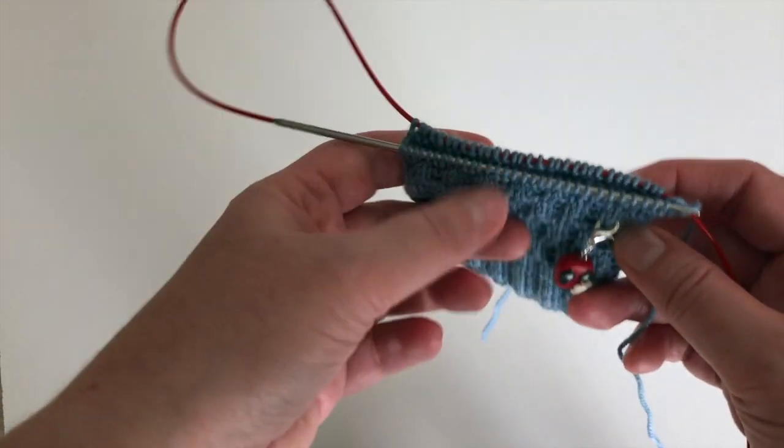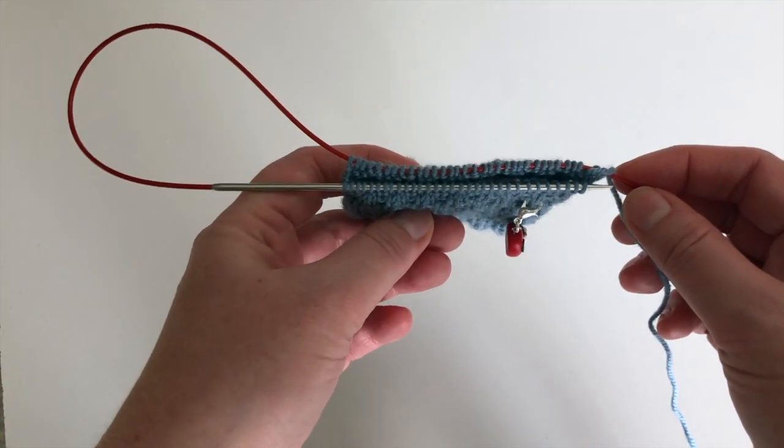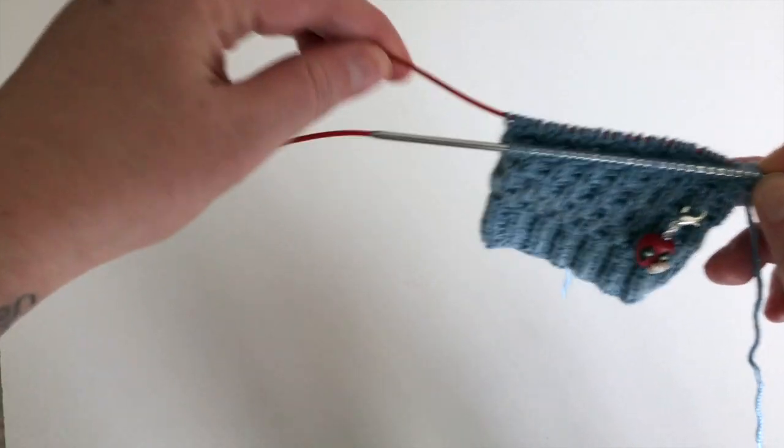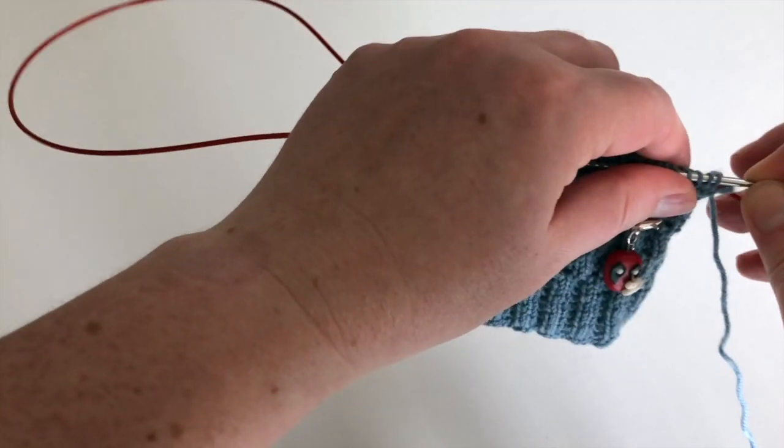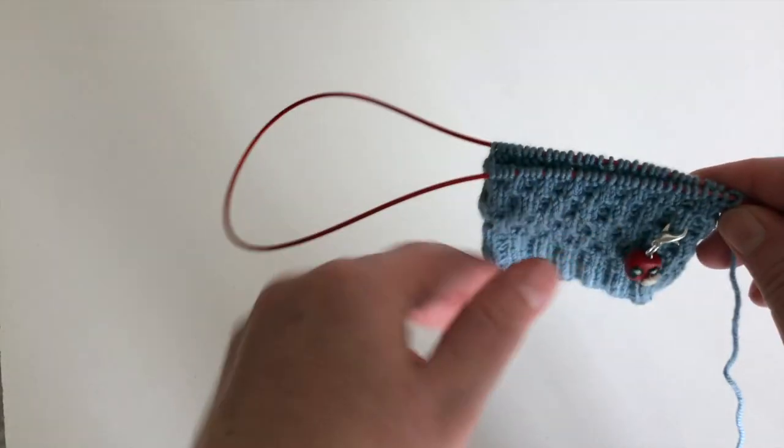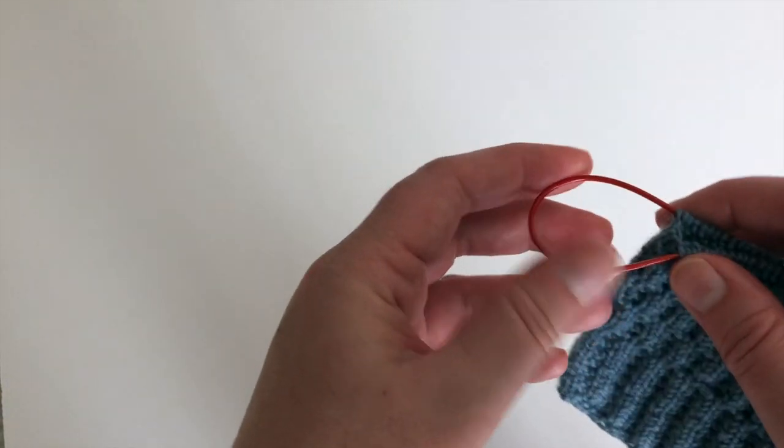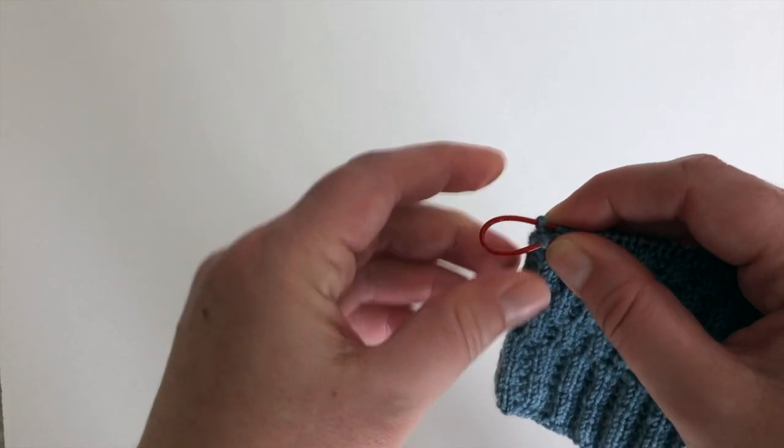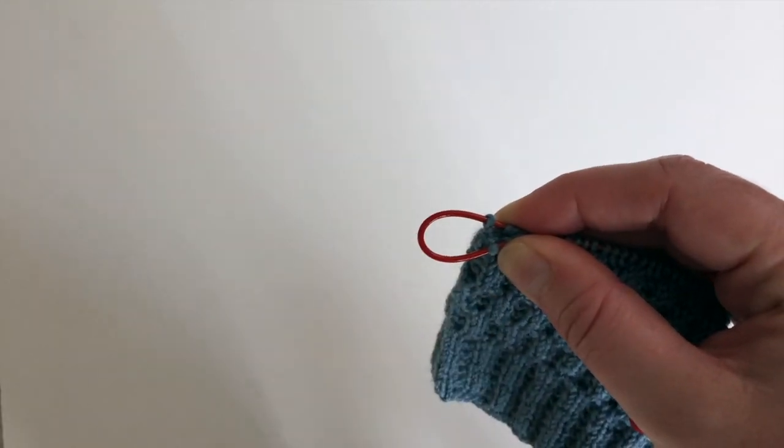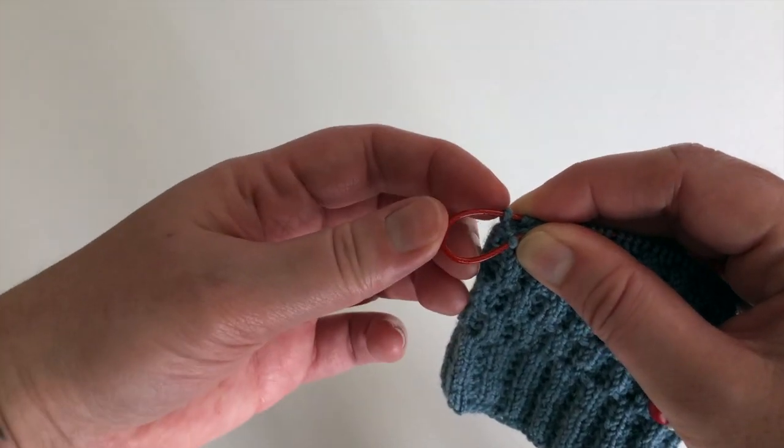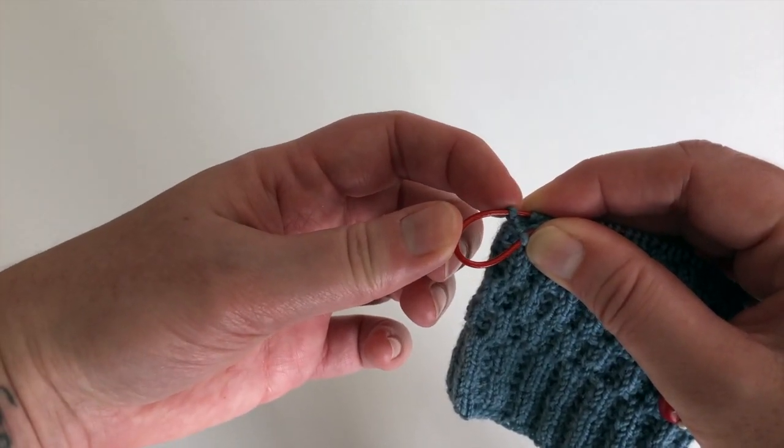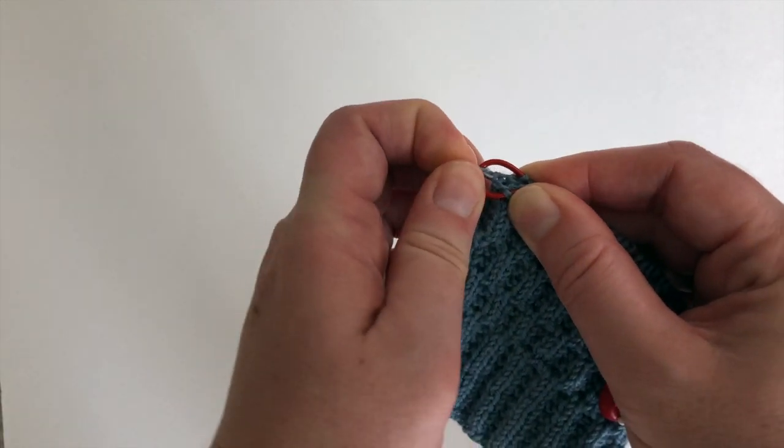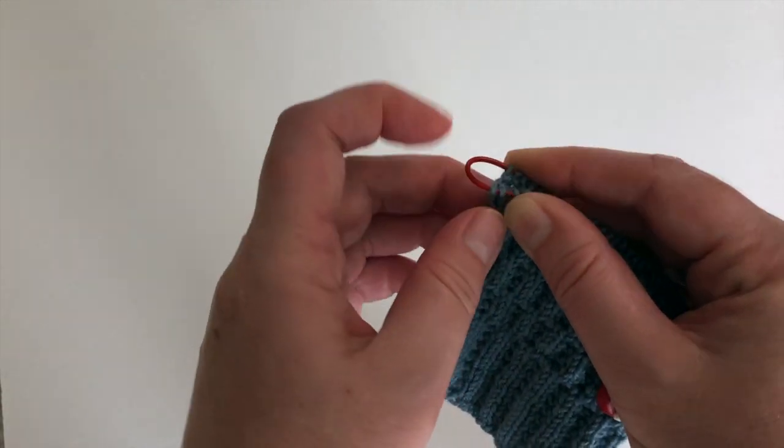So now we've got one more stitch on the back needle than we have on the front, so we need to make that a little bit more even. So what I like to do is get all of my stitches onto the cable, and it's dicey because you don't want to close up and lose your halfway point, but I basically pinch it. So I have those last two stitches, and we need to move this back one to the front. So I just push it around until it's slid onto the front.